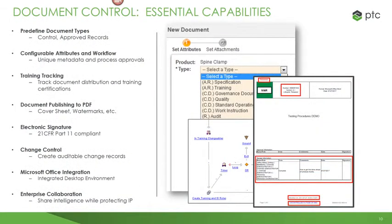Within the Doc Control solution, essential capabilities include predefined document types such as controlled documents and approved records, configurable attributes and workflows, training and tracking to define, approve, and monitor training against document types, document publishing to PDF with cover sheets and watermarks, electronic signature for complete configurability of e-signature at all appropriate areas, change control for fully integrated auditable records, Microsoft integration with desktop tools such as Word and Windows Explorer, and enterprise collaboration to share information across the enterprise.